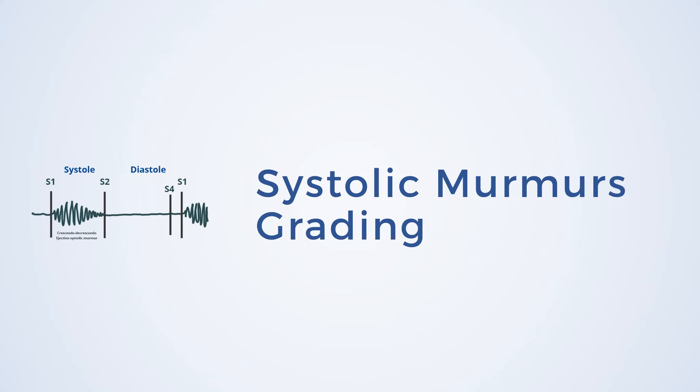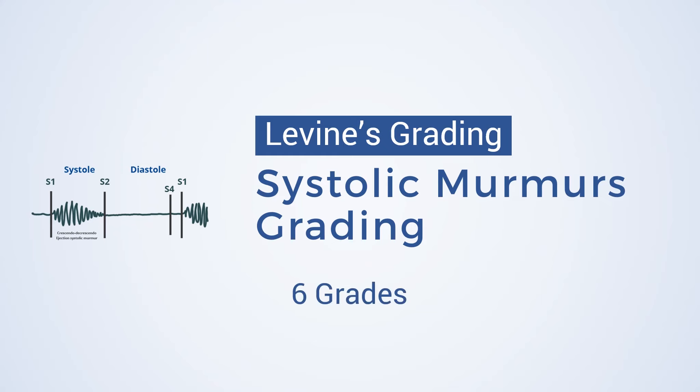Systolic murmurs are graded according to intensity of the murmur. Levine's grading grades systolic murmurs on a six-point scale.